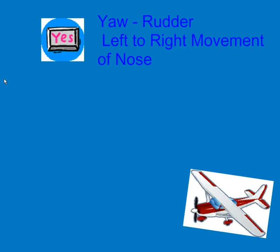The next one we're going to look at is yaw. The yaw is controlled by the rudder, and it's the left to right movement of the nose. The rudder is right back here, in this section — that's our rudder — and it's located on the vertical stabilizer. Here's our vertical stabilizer — just think vertical — and there it is in this section right here.